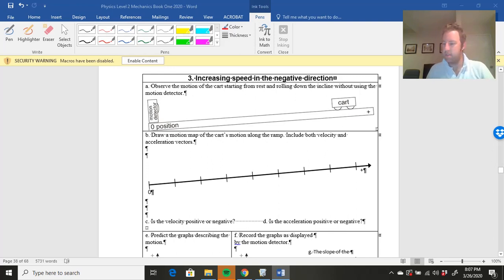Welcome back. So we're on page 37 now and what we're looking at is increasing speed in the negative direction. So what is this? We've got observe the motion of the cart starting from rest. It's starting here and I let it go and it rolls down the incline. So it rolls down by itself.